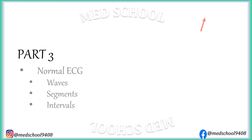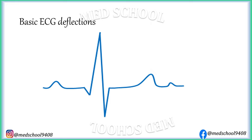You must be familiar with this complex. This complex represents electrical activity of the heart. First wave in this complex is P wave. It is small, rounded, symmetrical wave with blunt tip. It represents depolarization of atria. First negative deflection after P wave is called Q wave. First positive deflection after P wave is called R wave. First negative deflection after R wave is called S wave. These 3 waves combine to form QRS complex, which represents ventricular depolarization.